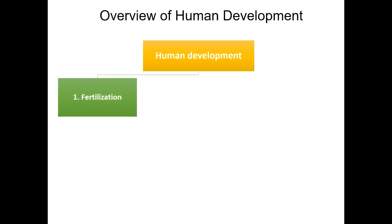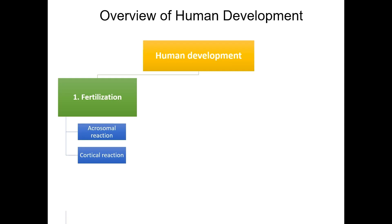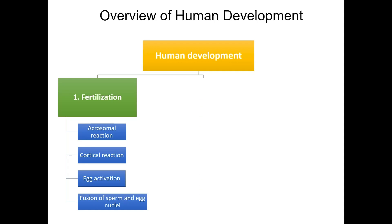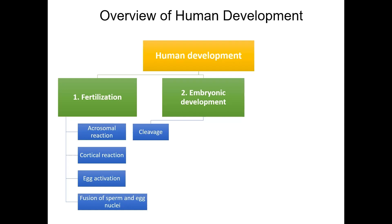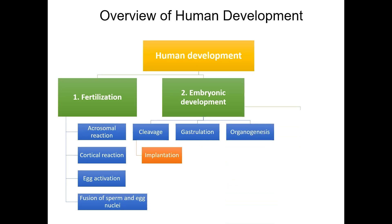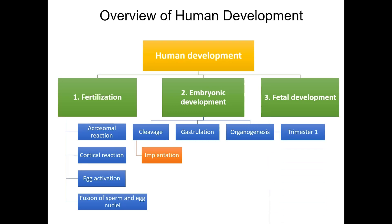It begins with fertilization, which involves four stages: acrosomal reaction, cortical reaction, egg activation, and fusion of sperm and egg nuclei. The second phase is embryonic development, which consists of three stages. The first stage is cleavage, and implantation occurs at the end of cleavage, prior to the next stage, gastrulation. Following gastrulation is organogenesis. The third phase before the baby is born is fetal development, which comprises trimester 1, trimester 2, and trimester 3.